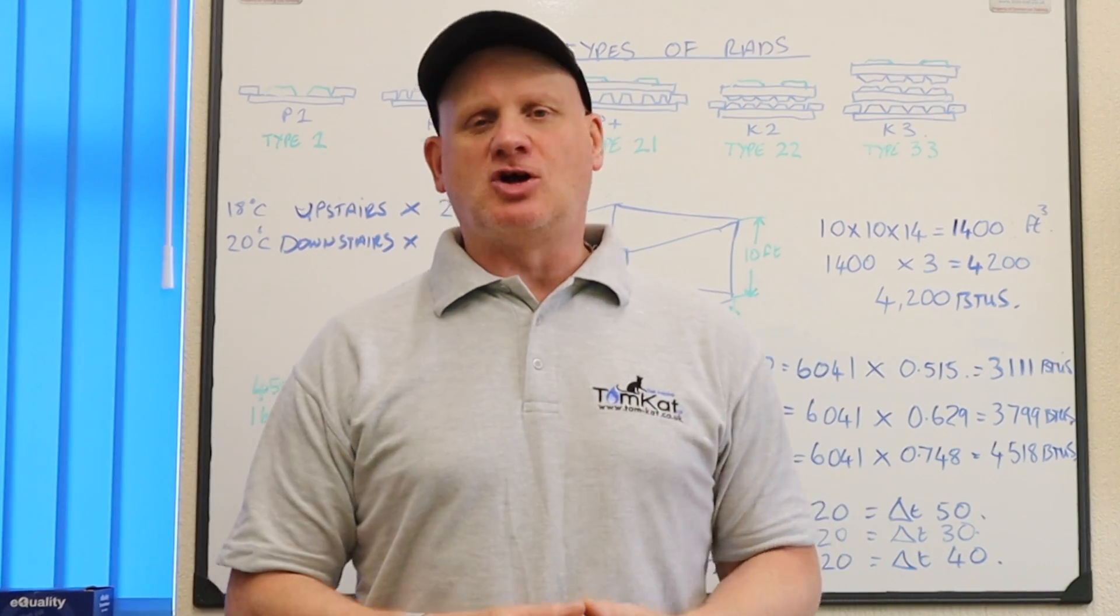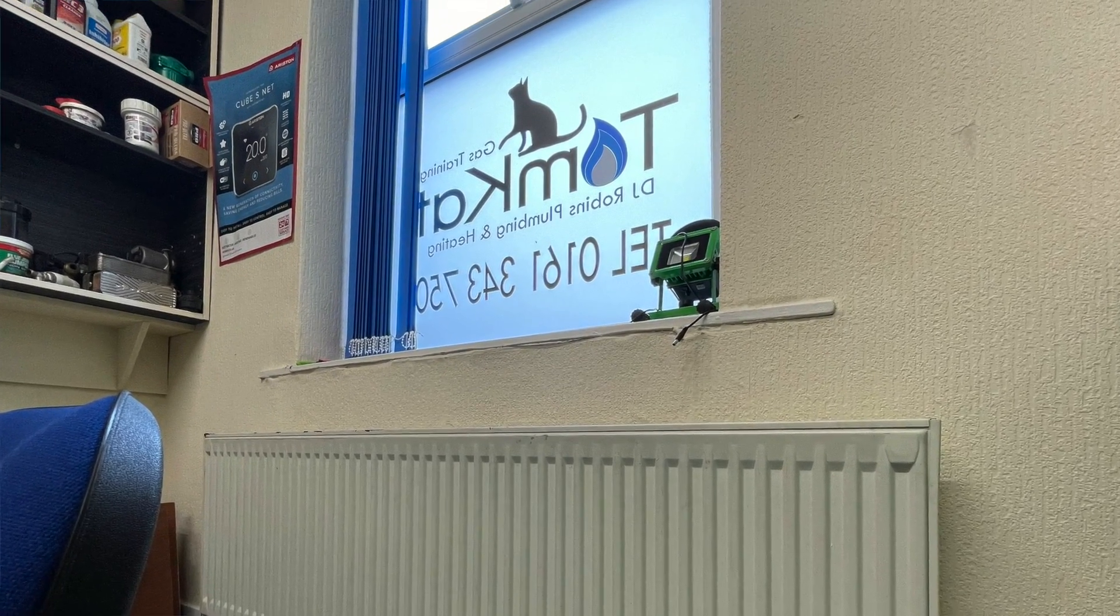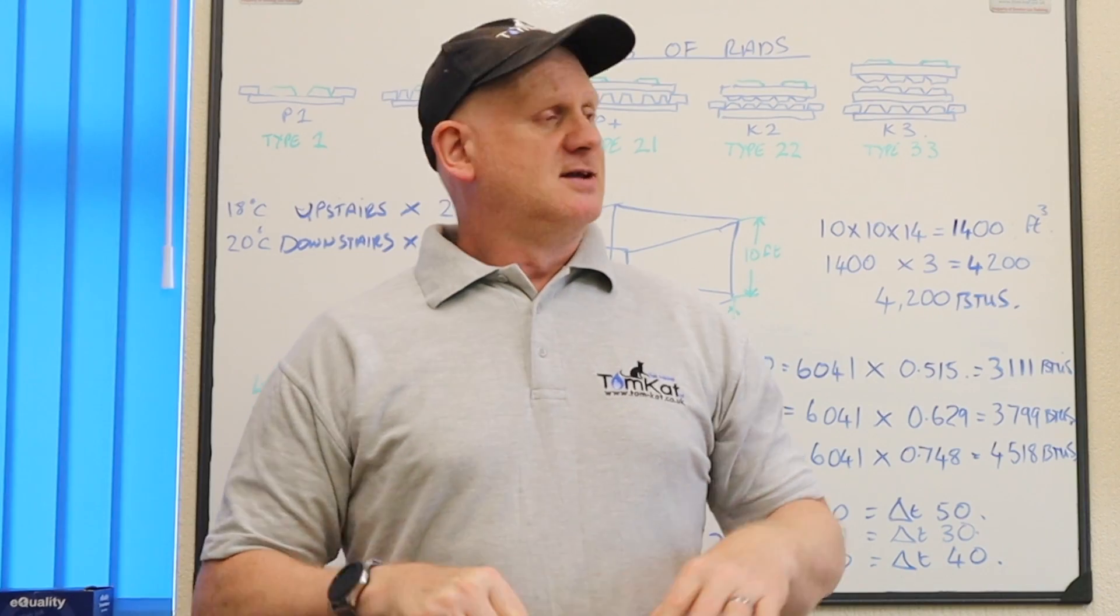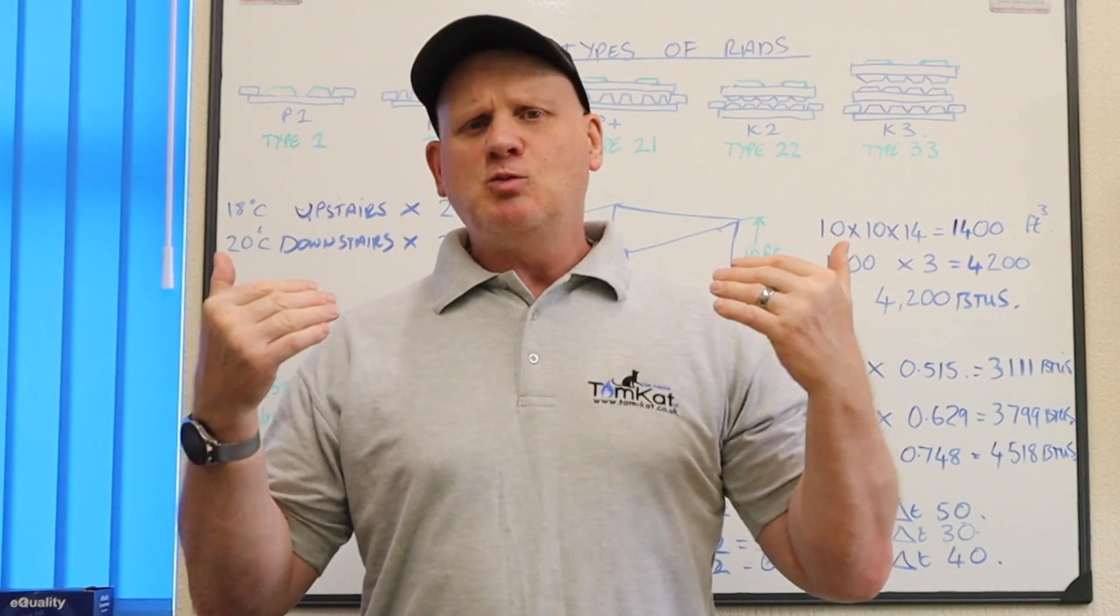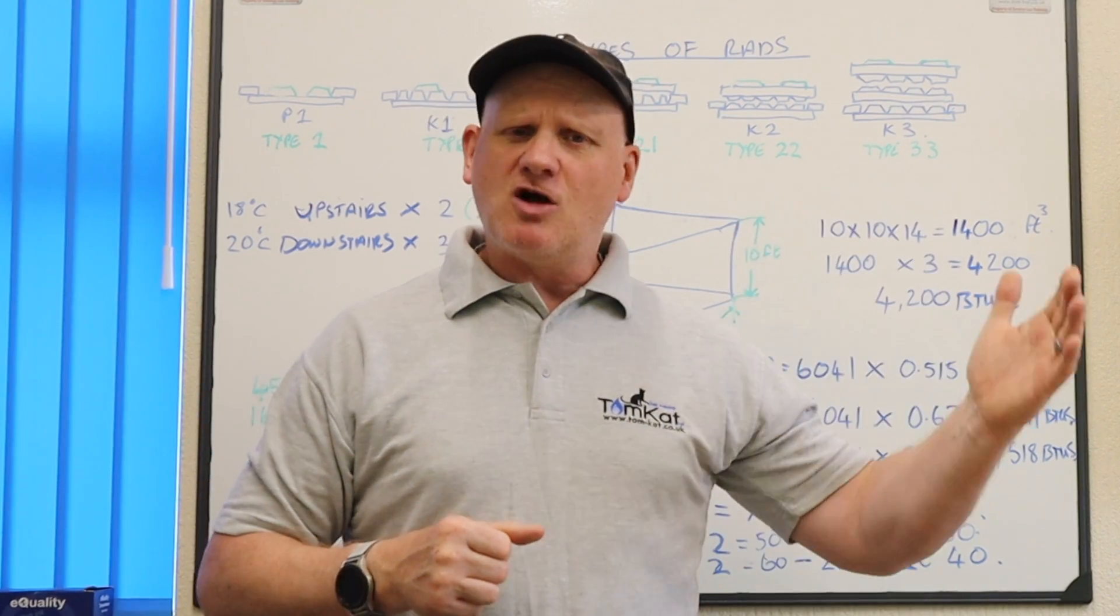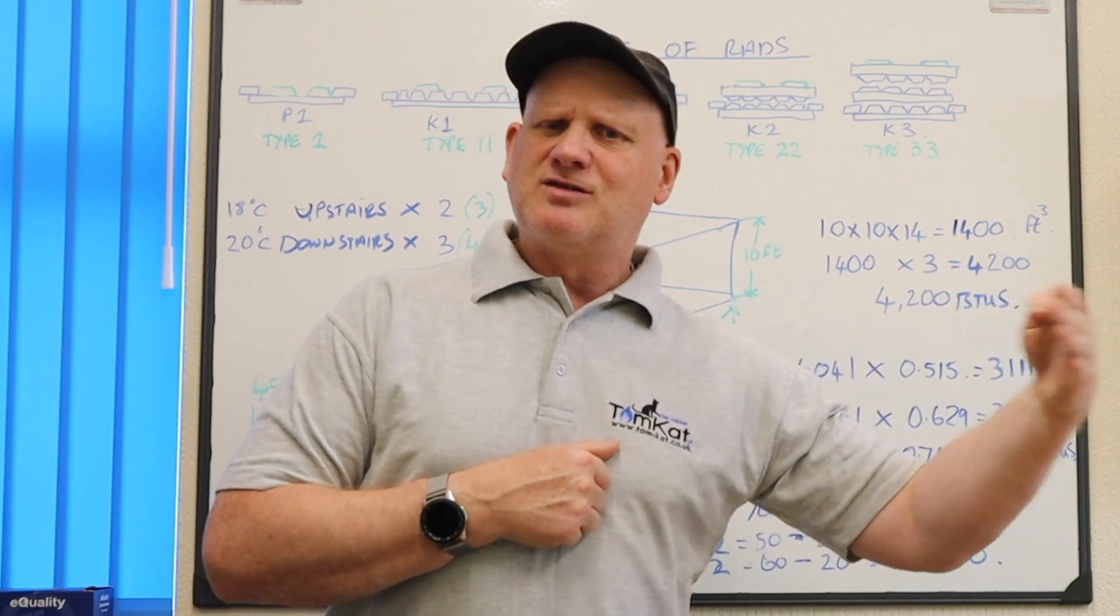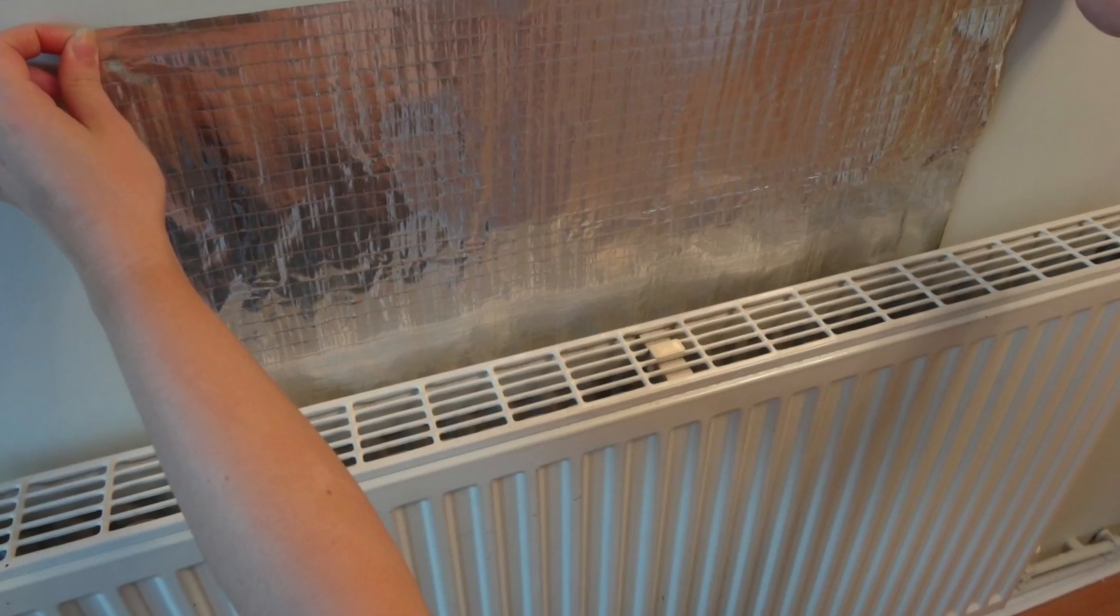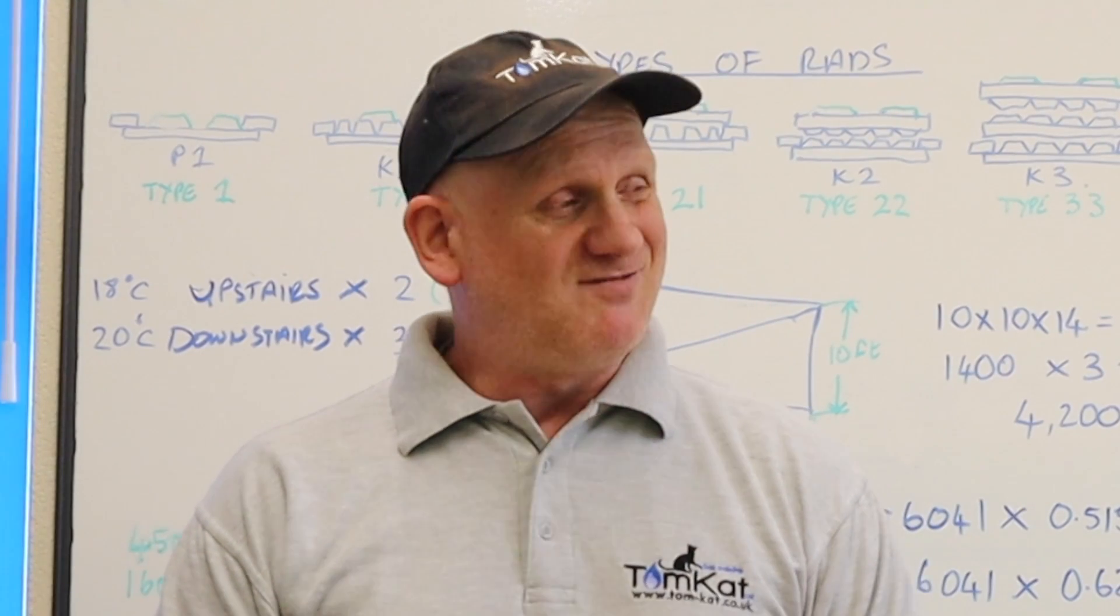Now radiators were traditionally installed on the windows, and that was because the cold air from the window would then help the convection, but they don't necessarily need to go under windows now because of double glazing. So they can go pretty much on any wall. If you put a radiator on an internal wall, then won't have any heat loss through the back. But if you've got a radiator on an outside wall, it could lose 10% of that heat through the outside wall. So you can put things like silver foil or deflectors around the back of the radiators.